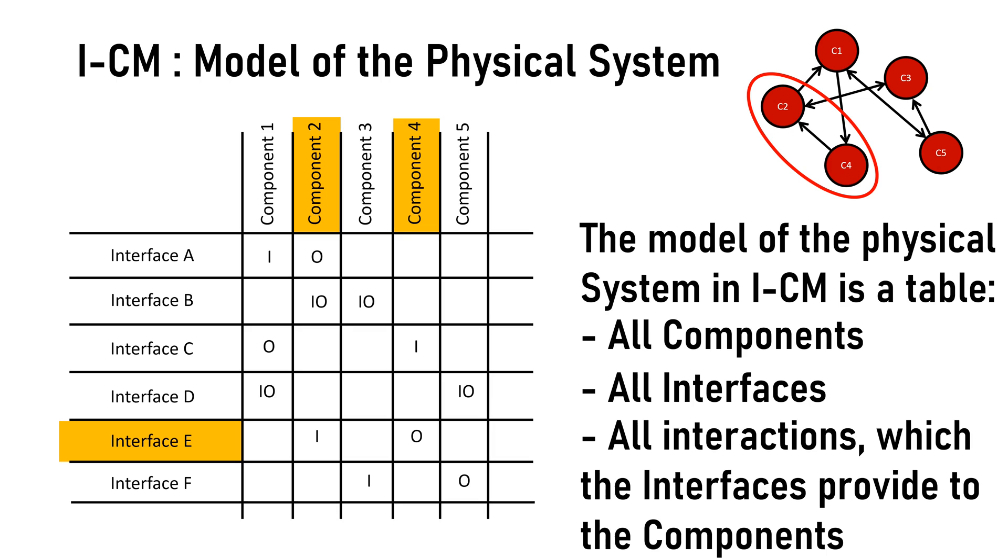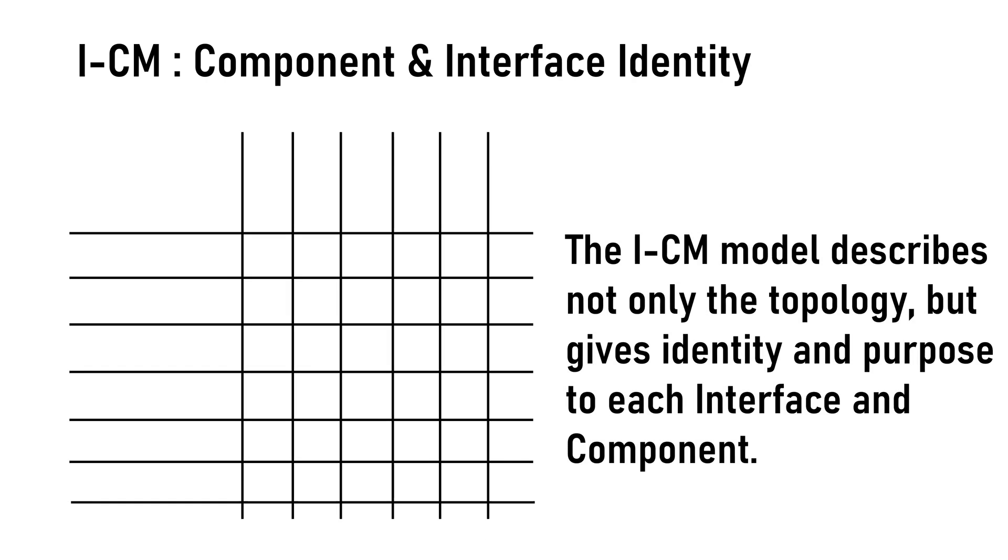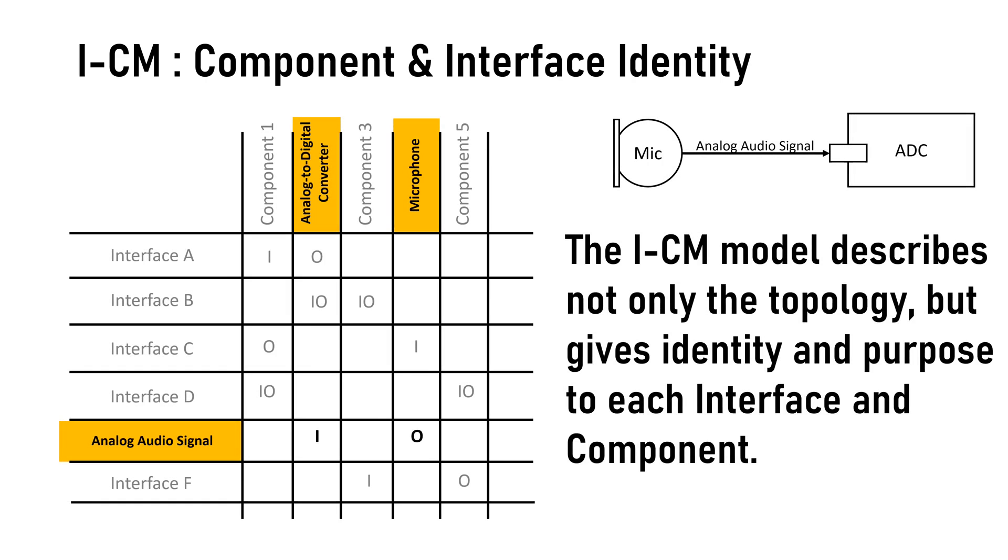It's very important however not only to represent the topology of the system but to give identity and purpose to each component and interface. Extending the previous example we can now clearly understand what the mentioned part of the system is all about. A microphone is transmitting analog audio signal to an analog to digital converter.